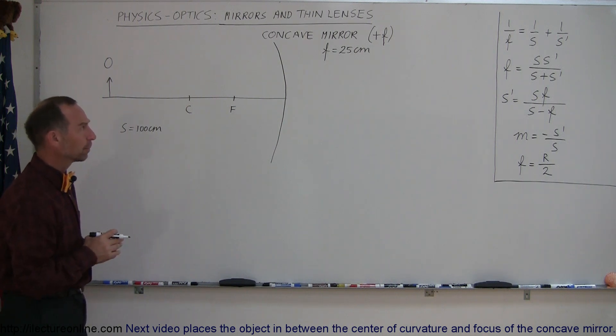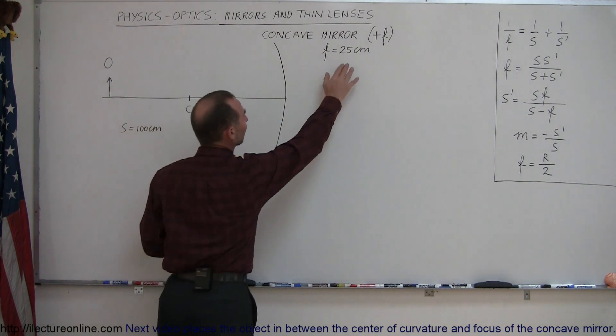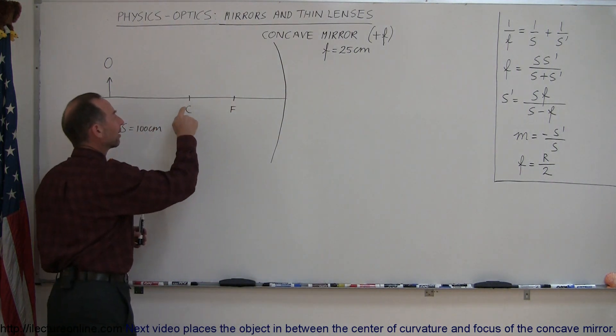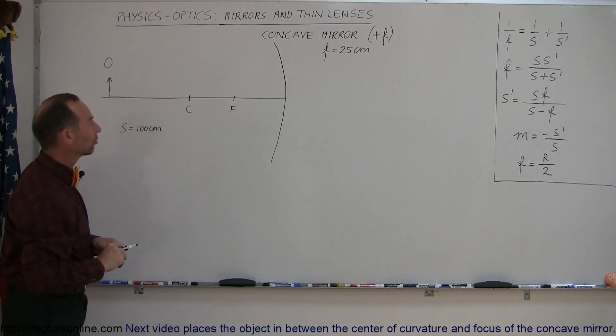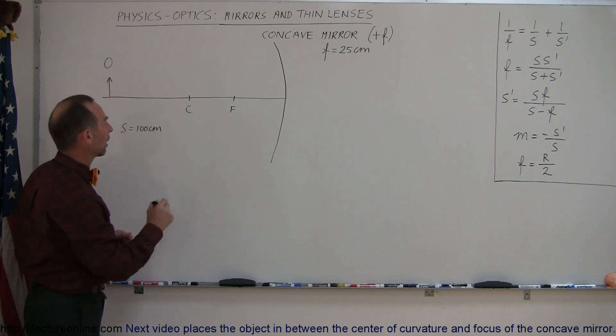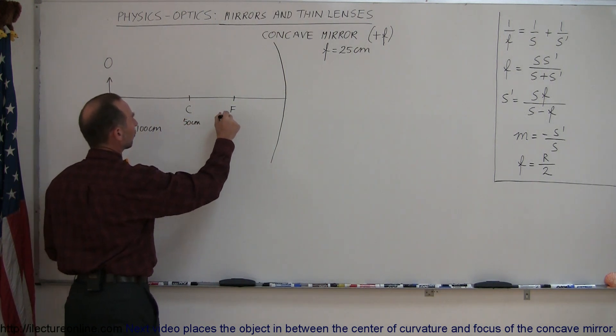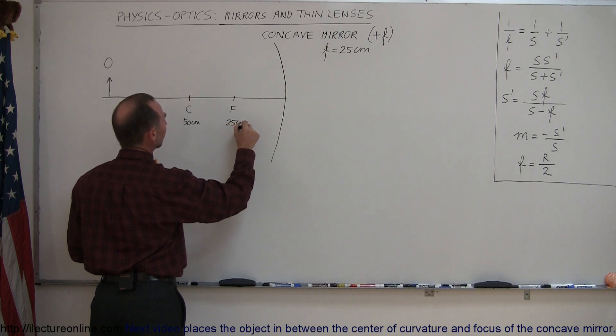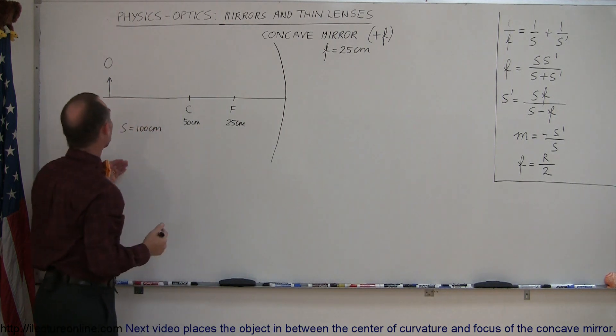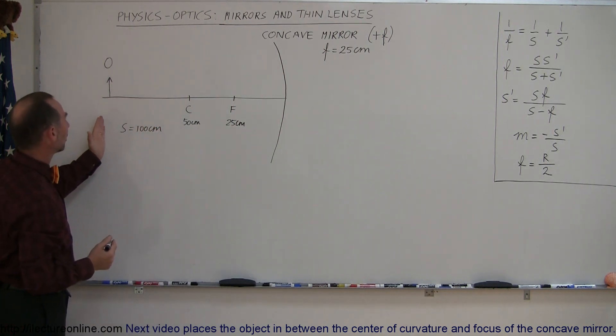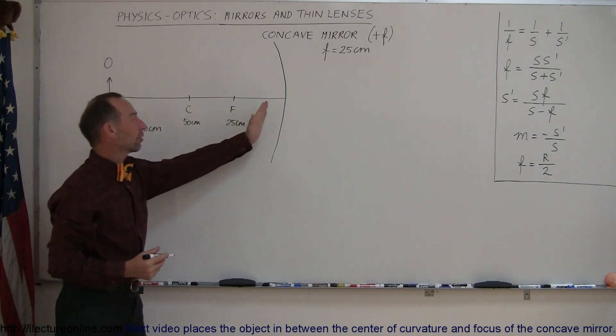We're going to look at a concave mirror. It has a focal length of 25 centimeters, which means that the center of curvature is twice as far away, or 50 centimeters away. So this point would be 50 centimeters away. The focal point would be at 25 centimeters. The mirror is concave and the object is placed 100 centimeters in front of the mirror.